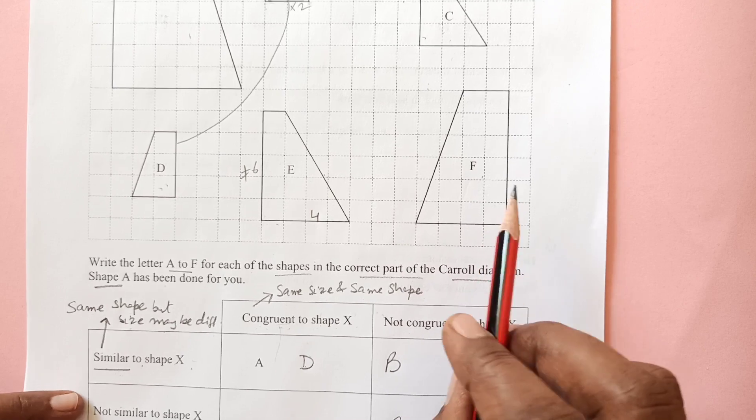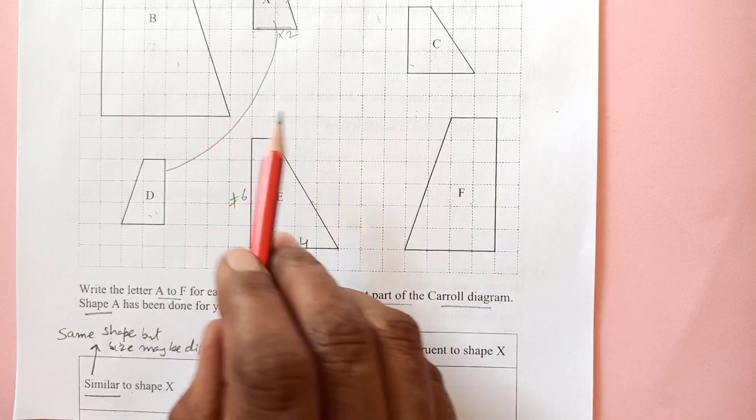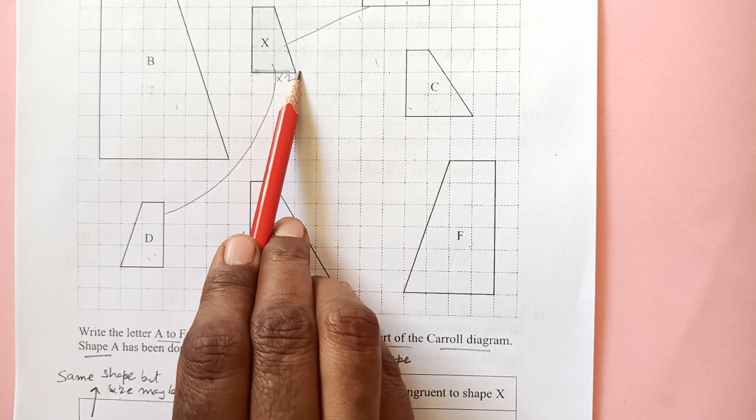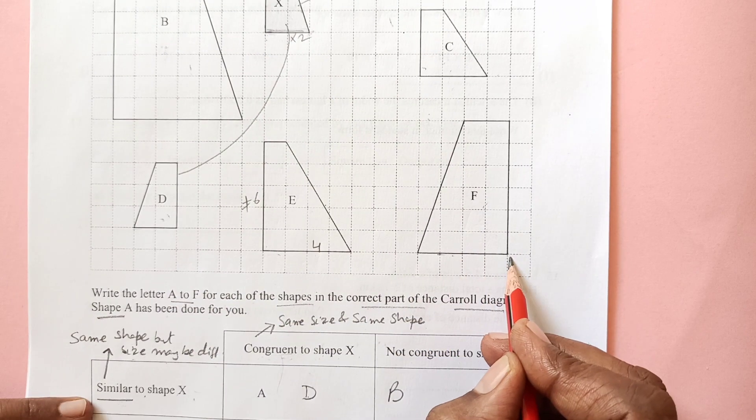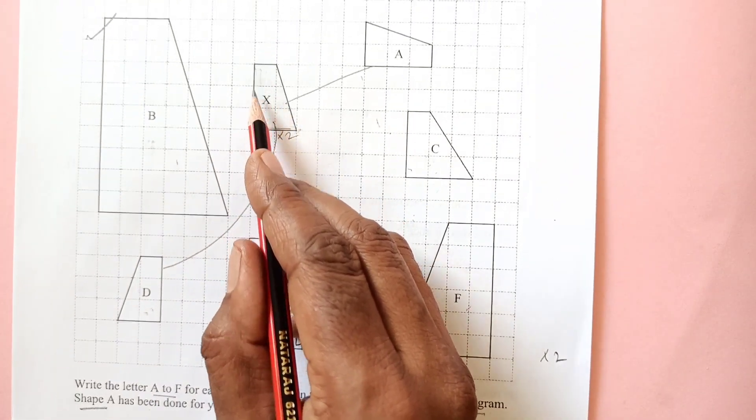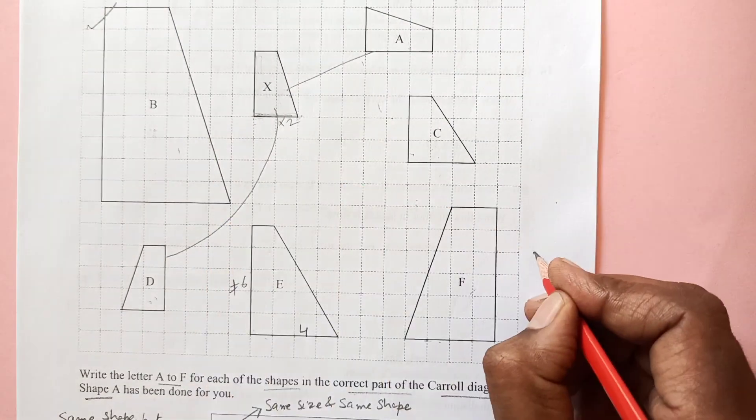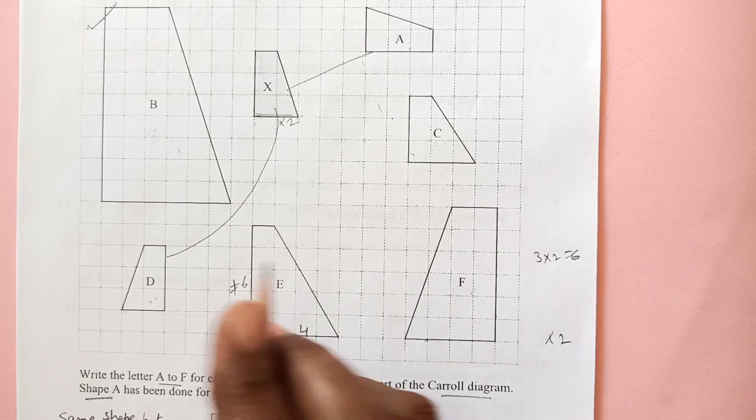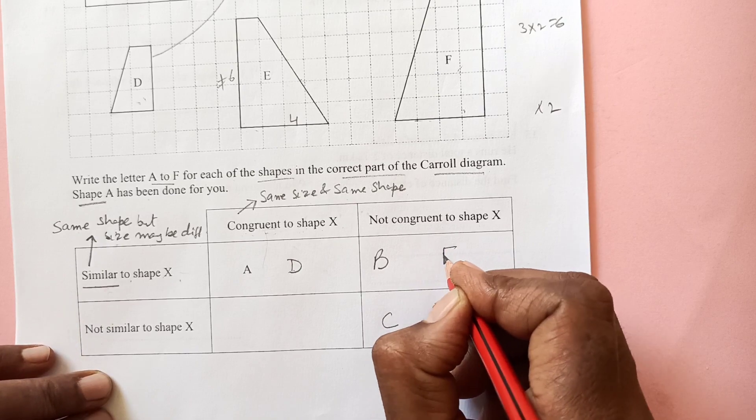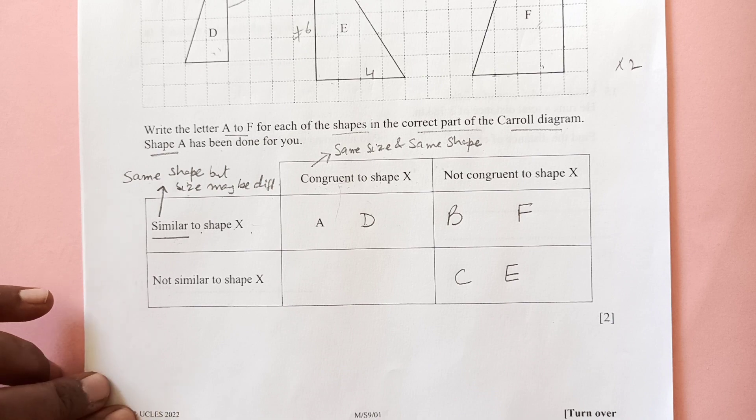We have F. F is congruent and similar. For similar we need to see if they're changing in the same ratio. This side we have 2 squares and this side we have 4 squares, times 2 is 4. Here we have 3 squares 1, 2, 3, and here we have 1, 2, 3, 4, 5, 6. So that is also 3 times 2 equals 6. We are getting this shape by times 2, so this is similar and congruent. We will have F here. This is how we complete this diagram and it will give you 2 marks.